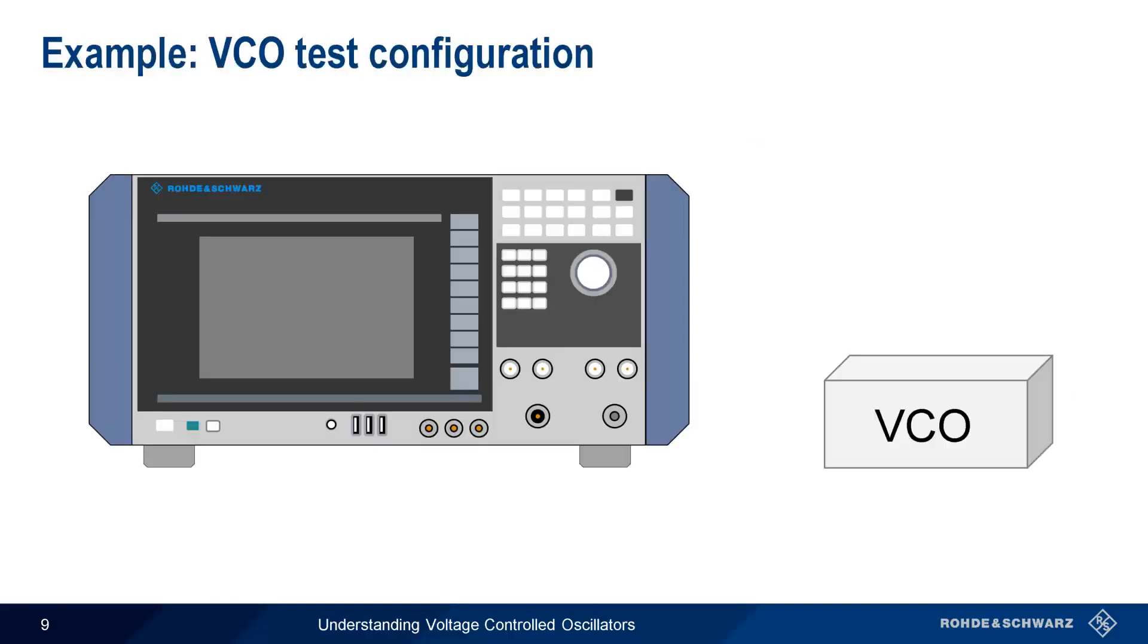Let's look at an example of a typical VCO test configuration. Three connections need to be made to our VCO. First, the VCO needs a supply voltage to operate. This is normally a fixed voltage.